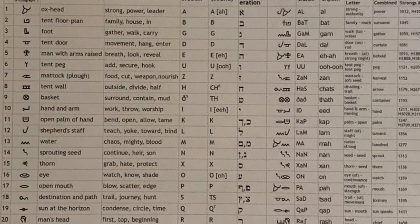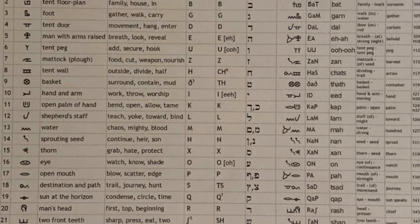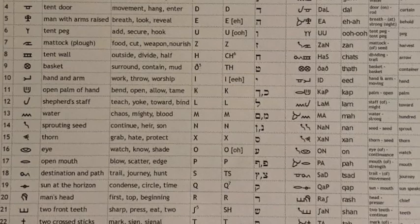Lamed has the shepherd's crook and means staff, teach, to and from. He is a little man holding his hands above his head and means to behold, to reveal, or to breathe. Yod is the outstretched arm, which means work, deed, or worship. And Mem is water, chaos, or blood.